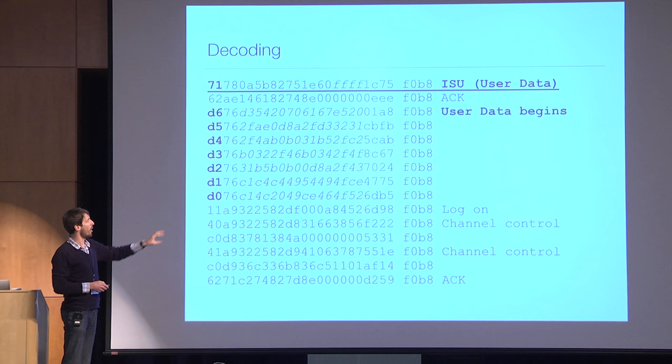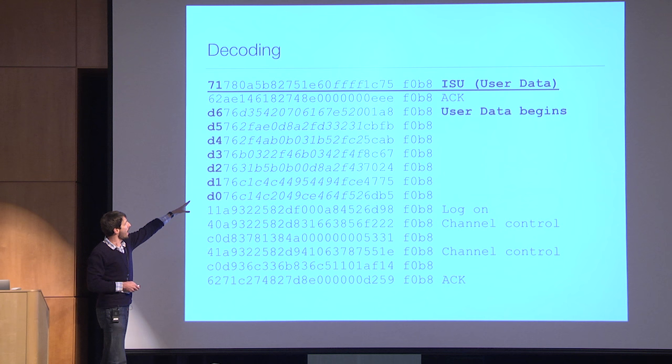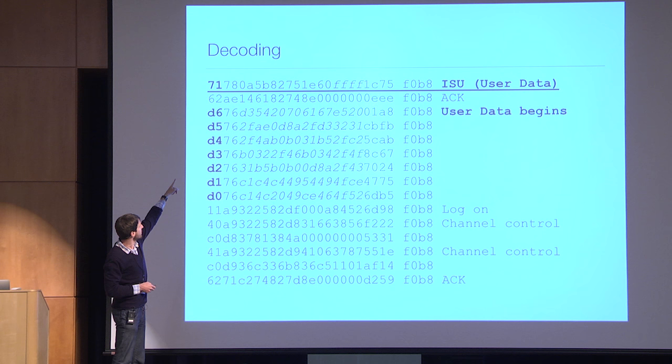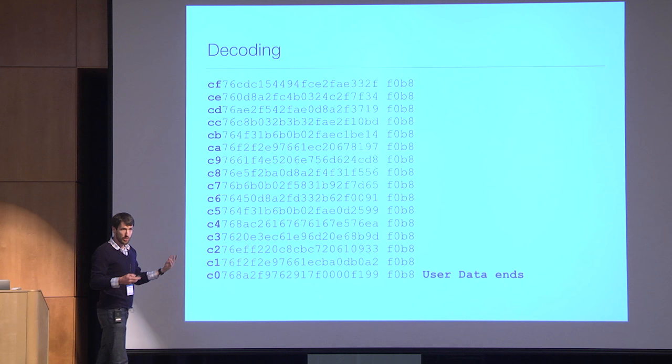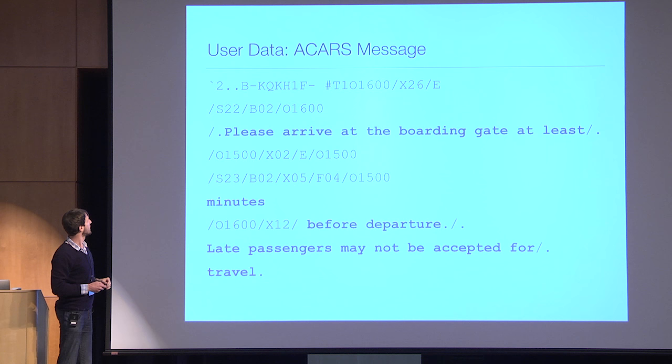What I was really interested in was the user data, signified by a particular bit sequence that can cover multiple SUs as they come out. They're counted down — you can see the sequence number happening there, from D6 to D0 and then continuing to C0 where it ends — and once you concatenate all that, you get human-readable text once you filter off the most significant bit.